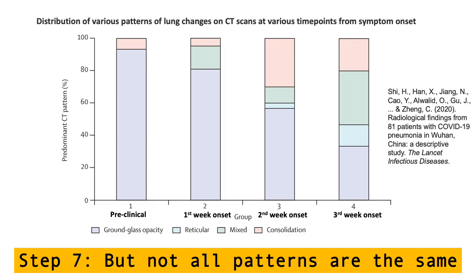It gets more complex. At the early stages, you will have a high amount of ground glass opacity within the CT scans. As you go down to the third week of onset, the ground glass opacity starts to reduce within the lung parenchyma. However, reticular mixed patterns and consolidation begin to increase significantly. So not all patterns are the same with the coronavirus — it also depends on what stage it's at, and the imaging patterns begin to change as well.